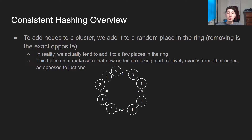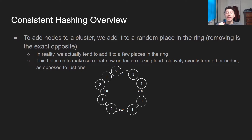In reality, though, typically we don't just add one circle per node to the ring — we add many circles. The reason we do this is that if you were to just add one circle on the ring, that one circle might be in a very unique portion of the ring with no other nodes close to it, and as a result it would take up a significant amount of the load and become a hotspot. So it's better to have multiple virtual nodes — which are just copies of the circle placed around the ring — and that helps us to more evenly distribute the load per node.